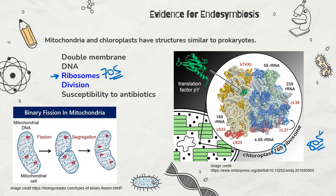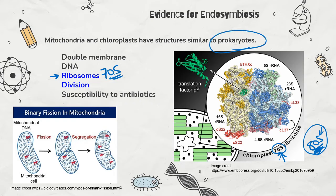S stands for Svedberg — a scientist who liked to spin ribosomes in a centrifuge, which makes more dense things sink further in a test tube. The bigger ribosomes sank 80 units down the test tube, whereas the smaller ribosomes only sank 70 units. The ribosomes that make proteins in our rough ER and cytoplasm are 80S. However, the 70S ribosomes in our chloroplasts and mitochondria match the ribosomes found in bacteria — bacterial cells have 70S ribosomes.